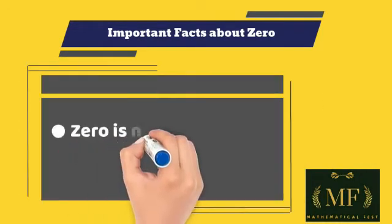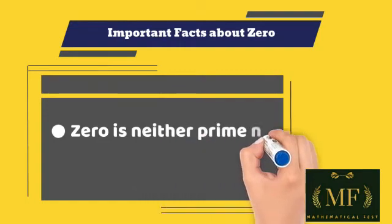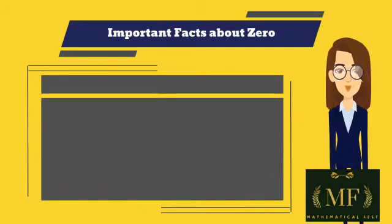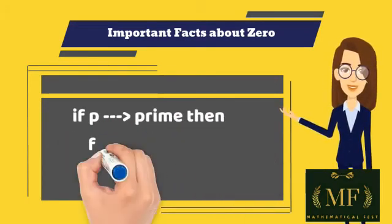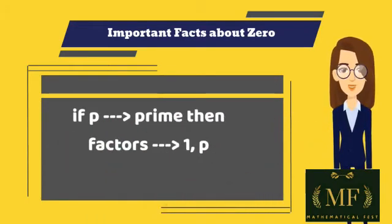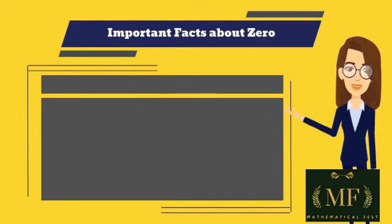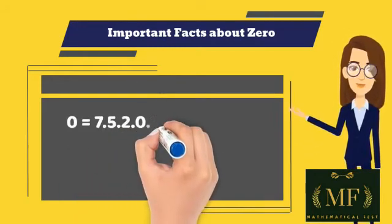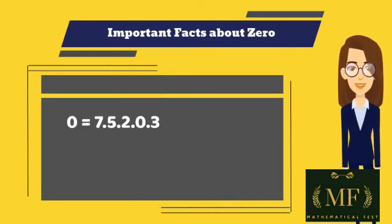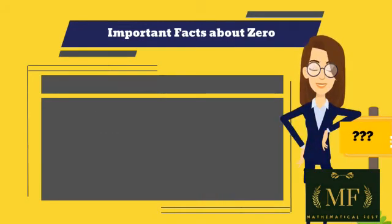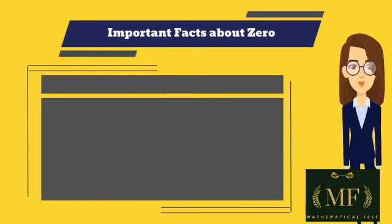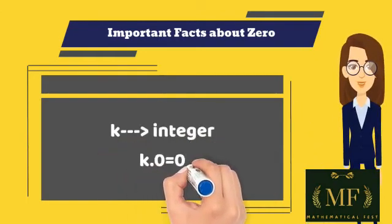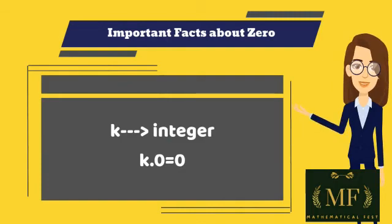Zero is neither prime nor a composite number. It's obvious that it cannot be prime, because a prime number has exactly two factors, but zero has an infinite number of factors — every non-negative integer divides zero. It's not composite either, as it cannot be expressed as a product of prime numbers, because one of the factors must be zero itself.